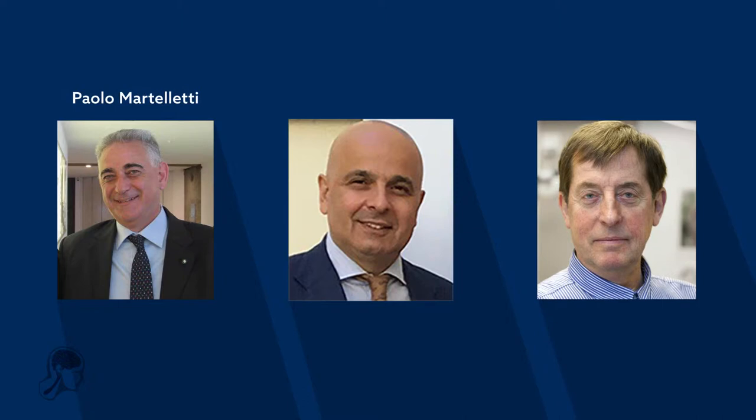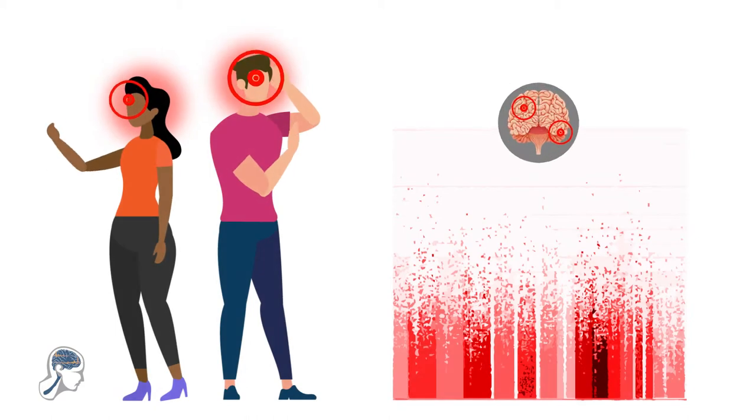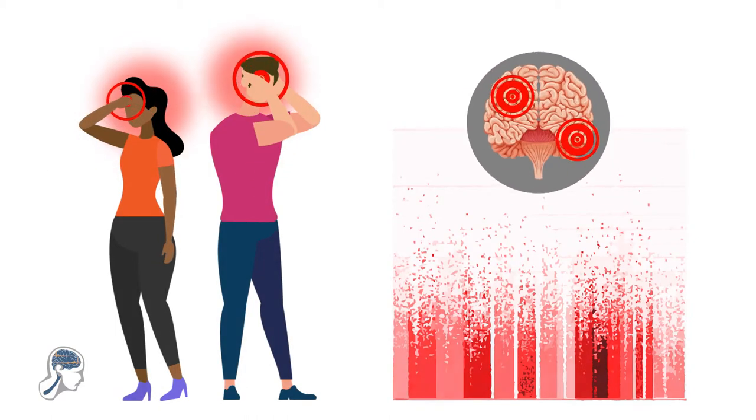In this themed series, Paolo Martelletti, Mesud Ashina, and Lars Edvinson introduce a comprehensive body of work that explores the genetics of migraine. A review, for example, covers the advances in understanding the genes and genetic variations implicated in migraine etiology.